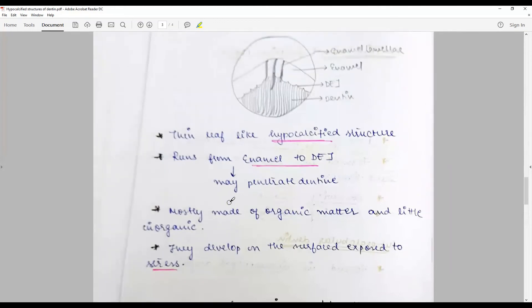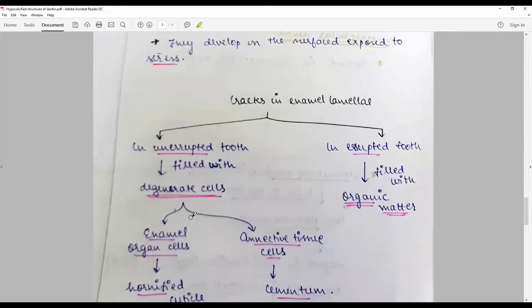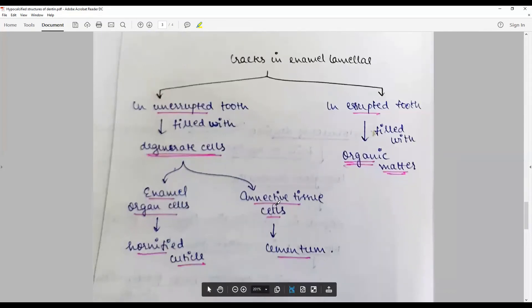Cracks in enamel lamellae in unerupted tooth are filled with degenerated cells from the enamel organs or from connective tissue cells. The source could be hornified cuticles in connective tissue cells or the newly forming cementum.